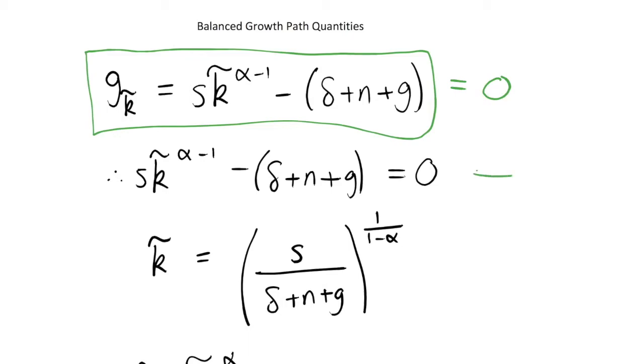So what I've done in the next line is we can just set this equal to zero, and from this it's very simple we can just rearrange to find what the value of our k tilde is going to be in balanced growth path.